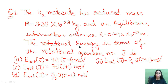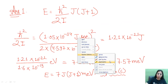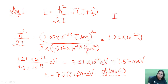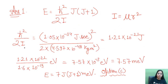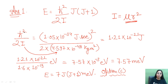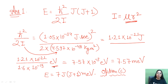The moment of inertia I is not directly given, so you find it using I = μr². Substituting the reduced mass and distance from the question gives the I value. After simplifying ℏ²/2I, you get a value in joules. To convert it to electron volts, divide by 1.6 × 10⁻¹⁹, and the final value you obtain is approximately 7.57 eV.